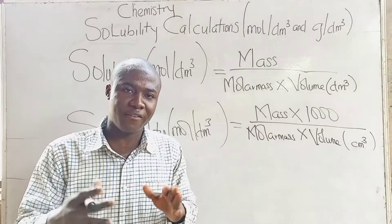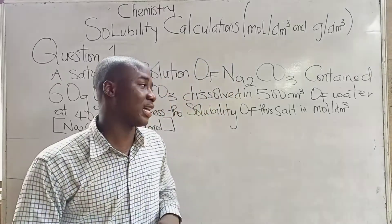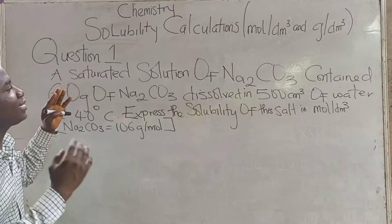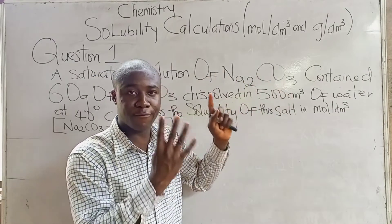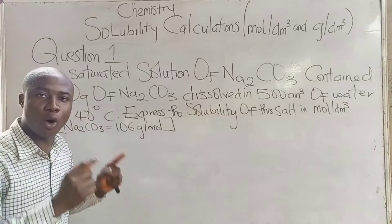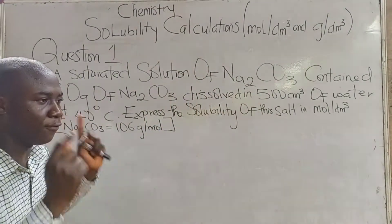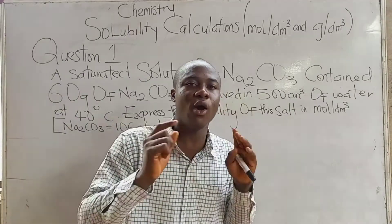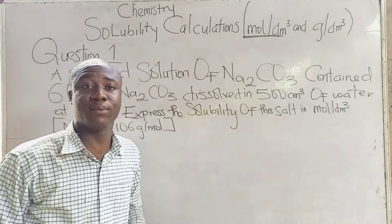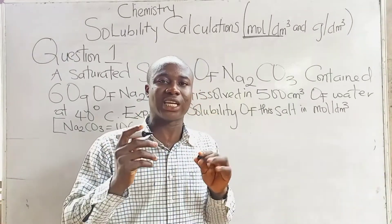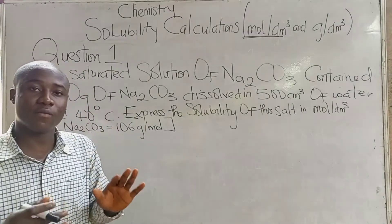Let's move over to our first example. A saturated solution of Na₂CO₃ (sodium trioxocarbonate) contained 60 grams of Na₂CO₃ dissolved in 500 cm³ of water at 40 degrees Celsius. Express the solubility of this salt in moles per dm³. It must be noted that temperature is not needed when solving questions on this aspect. They just include it to cause confusion, but we don't use temperature.